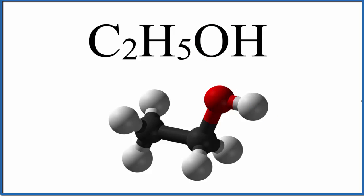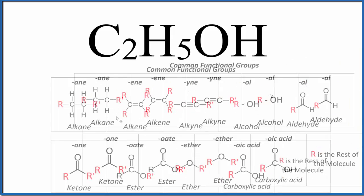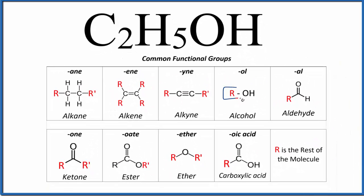So the OH here, that's called a functional group in organic chemistry. And we can look it up on this table here. So we have our R. R is the rest of the molecule. That's this part right here. And then the OH, that is an alcohol. That tells us that we have an alcohol.